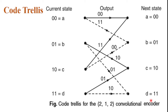The code trellis is a more compact representation of the code tree. In the code tree there are four states — A, B, C, D — also called nodes. Every state goes to some other state depending upon the input. The code trellis represents a single and unique diagram for such transitions.